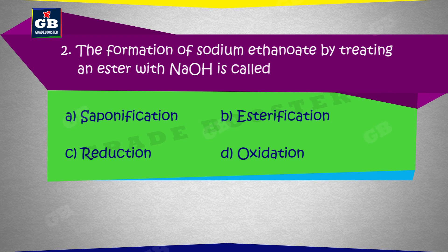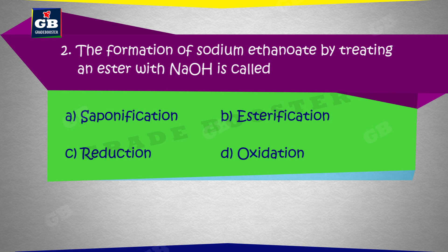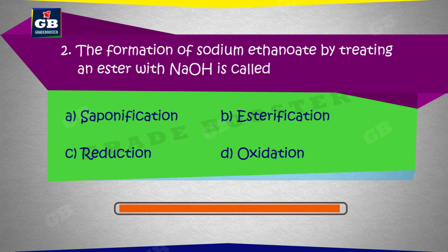The formation of sodium ethanoate by treating an ester with sodium hydroxide is called — sodium hydroxide ke saath ek ester ke treatment se sodium ethanoate ka gatan hota hai, ise kehte hain: a) Saponification, b) Esterification, c) Reduction, d) Oxidation.